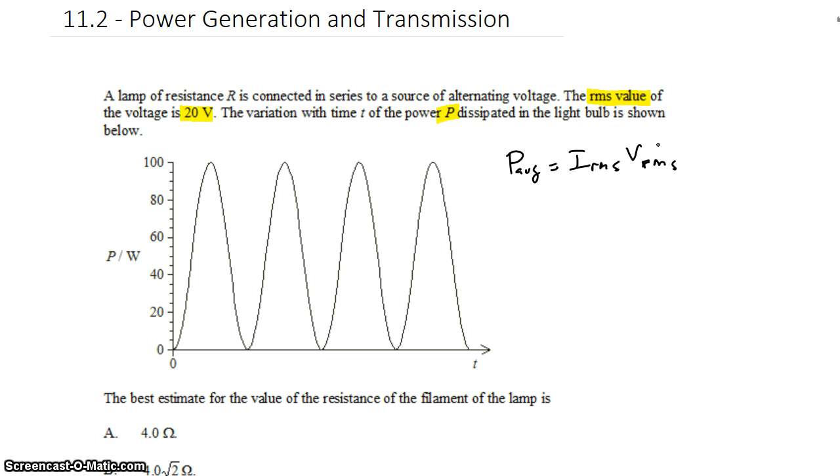It kind of makes sense that if you took something like the average voltage and multiplied it by something like the average current, you'd get the average power, which you do.